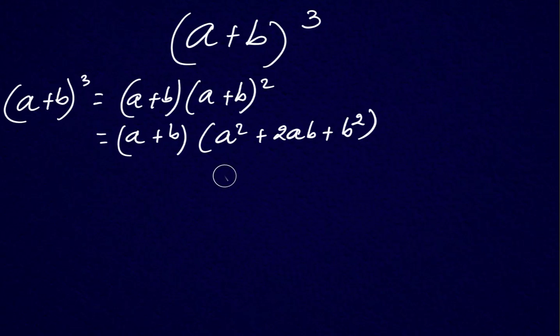Now we distribute the a and the b to the right side. We get a cubed plus 2a squared b plus ab squared, then 2a squared b here, plus a times b squared, ab squared. Plus a squared b again here, or b a squared, the same thing. Plus 2ab squared, plus b cubed.